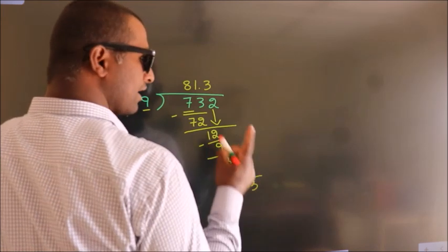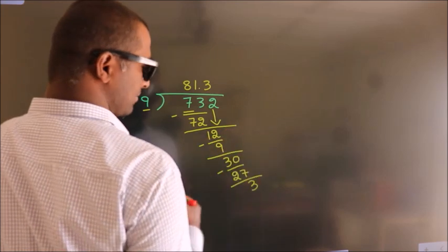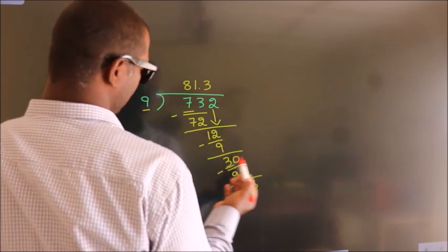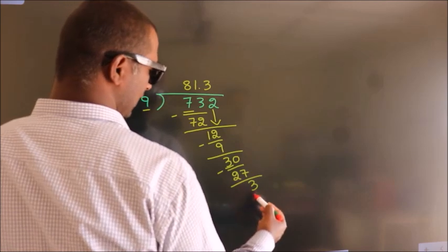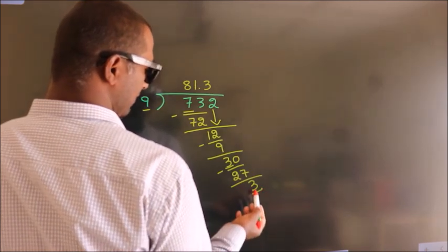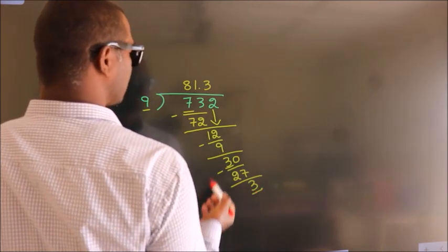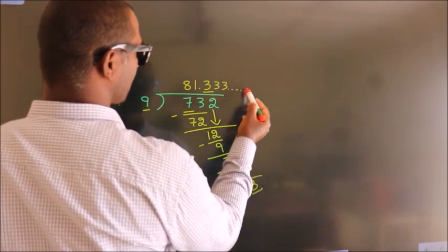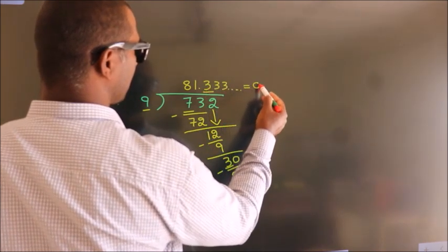Now you observe, we had 3 here and we got 3 again. That means this number keeps on repeating. So this is our quotient.